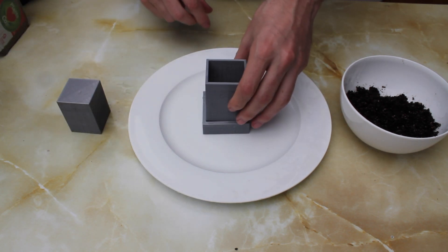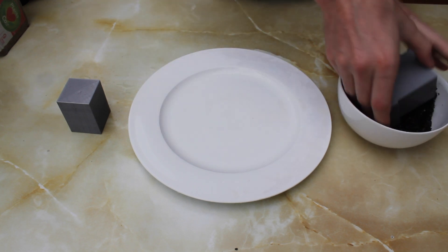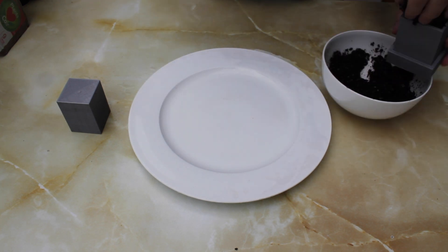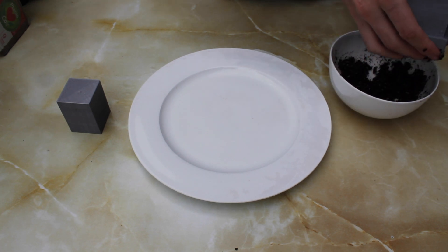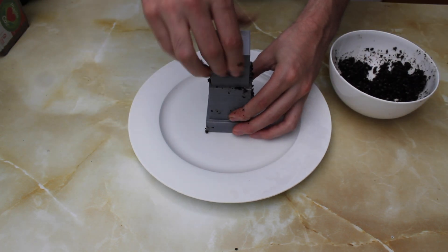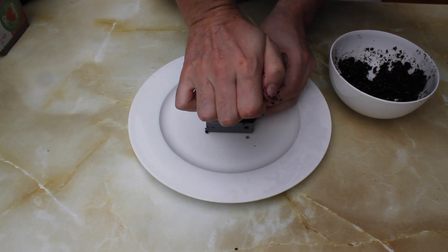You begin by placing the chamber on top of the plate and packing it with your seed starting mix. Insert the tamper into the chamber and press down firmly until water starts to drip out of the bottom.